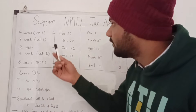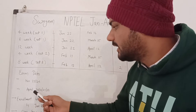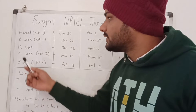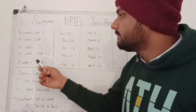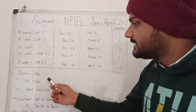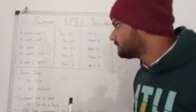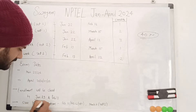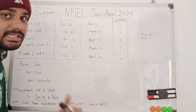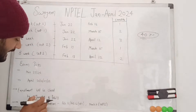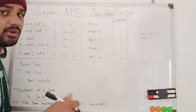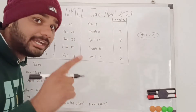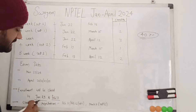The exam dates are March 23rd and 24th for the four-week and eight-week Set 1 courses. For the twelve-week and eight-week Set 2 courses, exam dates are April 20, 21, 27, and 28. The four-week Set 2 exam date is March 23rd and 24th. Enrollment will be closed by January 29, with courses starting January 22. The last enrollment date for Set 2 is February 19.